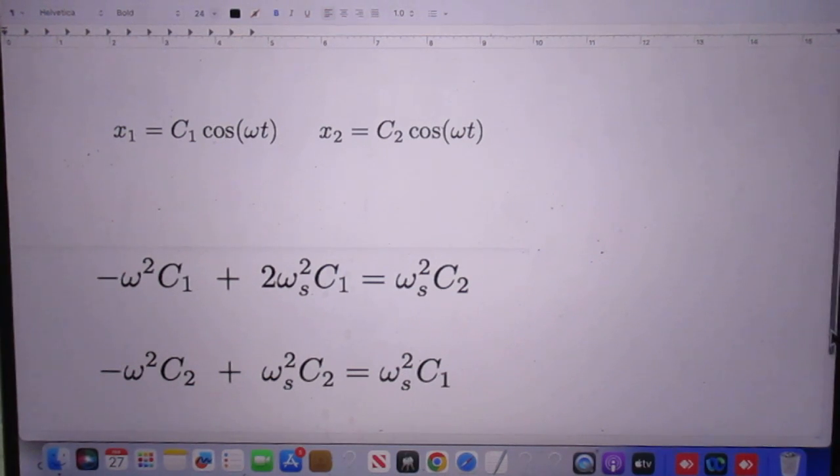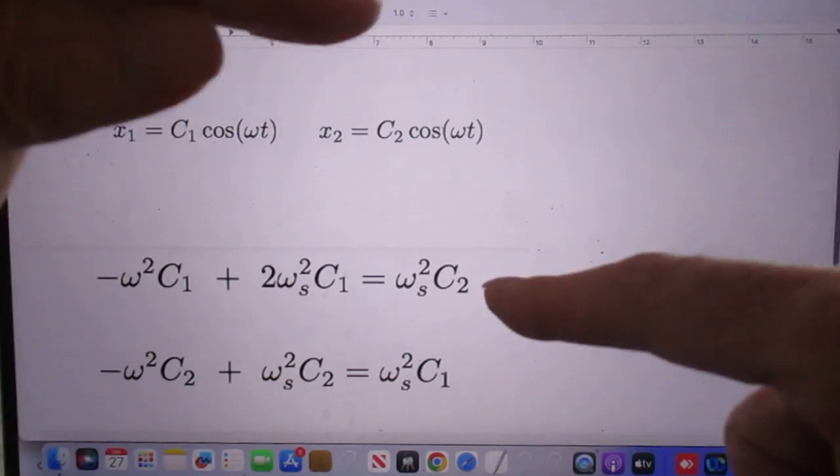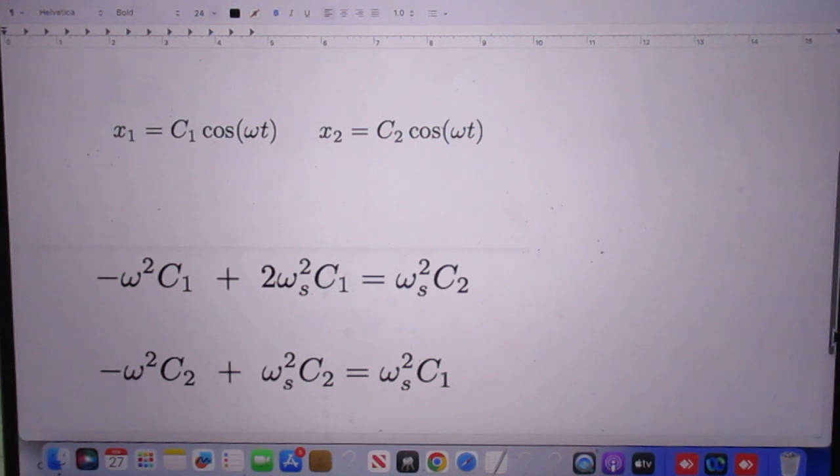But in the case of the highest frequency, they go in opposite directions, and so then C1 over C2 will be negative, and you will see that very shortly.